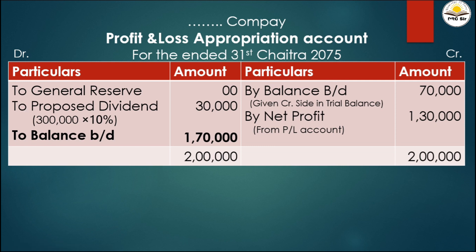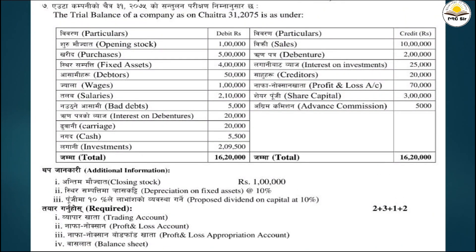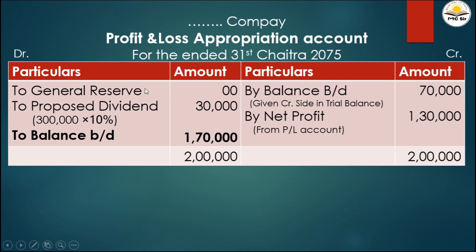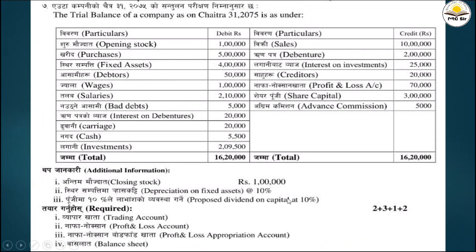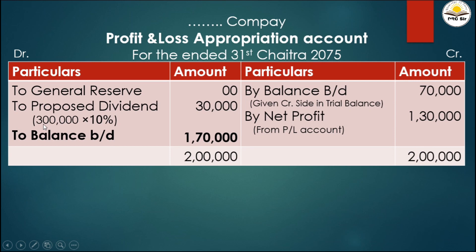On the debit side of the appropriation account: general reserve (from additional information - transfer to general reserve). Next, proposed dividend: capital is 3 lakh at 10%, so proposed dividend equals 30,000. After all appropriations, the balancing figure is 1 lakh 70 thousand, which is the balance carried forward.